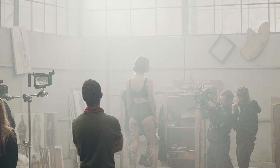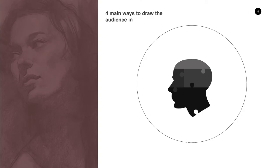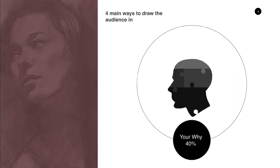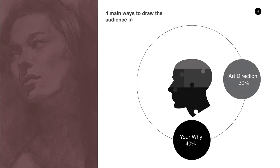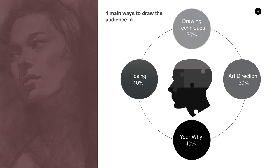There are four main ways to draw the audience in. Imagine your portrait represented by puzzle pieces — each puzzle piece is one of these four ways. Number one is to know your why, which is maybe 40% of what you need to consider. Number two is art direction — using camera angle and composition techniques. Then there's drawing techniques, maybe 20%. And finally, posing — maybe 10% — using body language to convey your message.